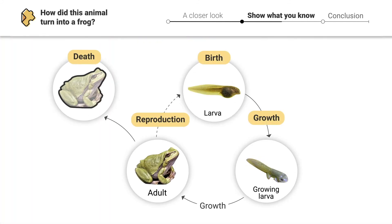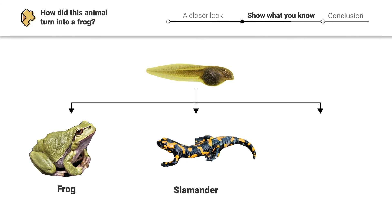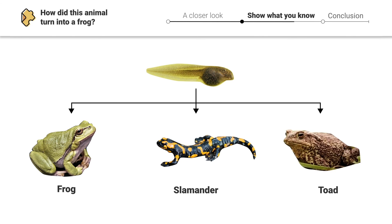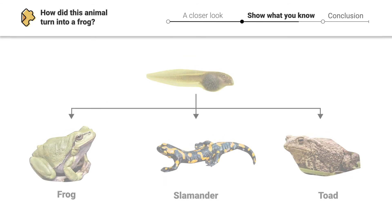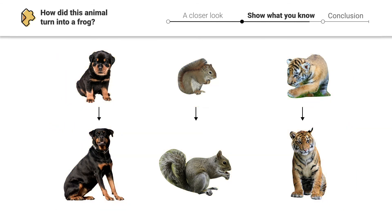In this lesson we discussed how amphibians — animals that must live in water and on land — go through a process of metamorphosis during their life cycle. Animals such as frogs, salamanders, and toads will have very different characteristics as they grow. Animals like dogs, squirrels, and tigers look very similar when they're young and when they're adults — they're mostly just bigger — because these animals do not go through metamorphosis.